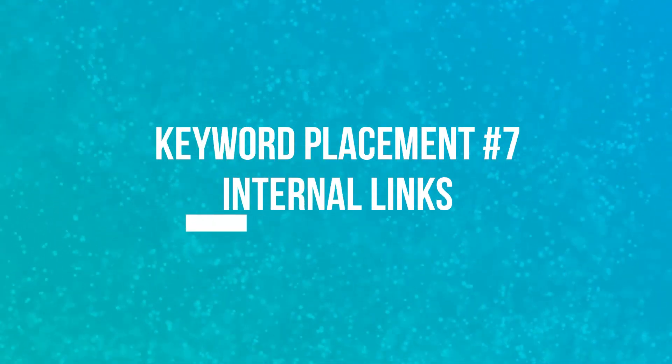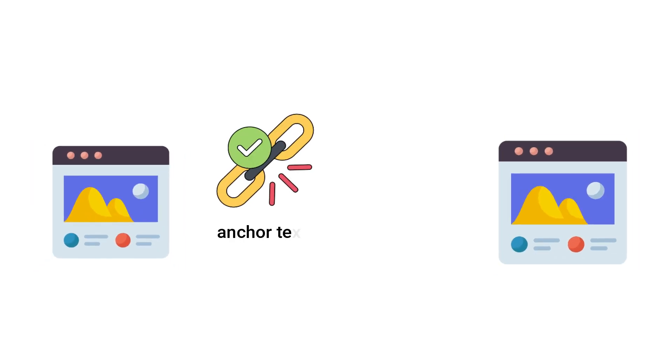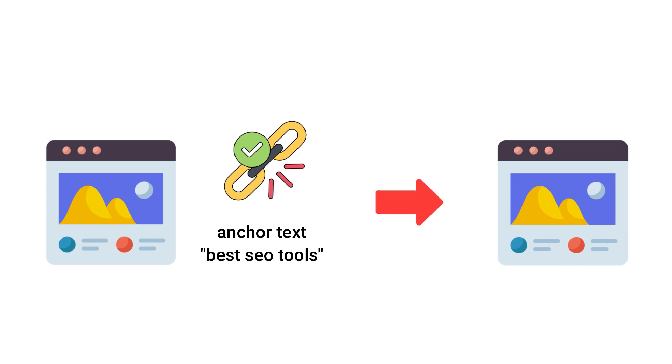The last keyword placement that is super important and you should always optimize for is in your internal links. Internal links are essential for your website's crawling, ranking, indexing, and overall SEO success, as Google uses them in numerous ways. John Mueller said it's one of the biggest things you can do on a website to guide Google and visitors to the pages you think are important. He also stated that internal linking is an opportunity to communicate something more to Google than what navigation links can communicate. Therefore, using internal link anchor text to include your primary keywords is a great way to tell search engines what your page is about and what keywords you want to rank for.